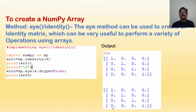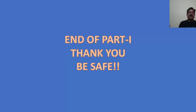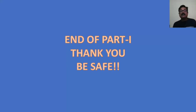To create the identity matrix, the np.eye or np.identity method can be used to create an identity matrix, which is useful to perform a variety of operations using arrays. In the output, all other elements are zero and only the diagonal elements are one. This kind of matrix is called an identity matrix. This is the end of part one — try to understand these things, consult any book, and try out these programs in Python as well. Thank you, be safe.